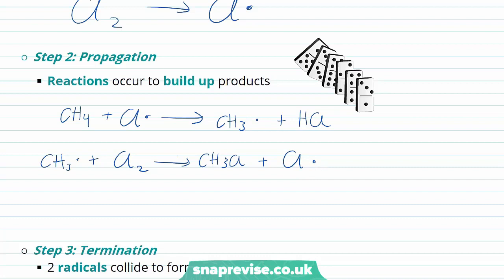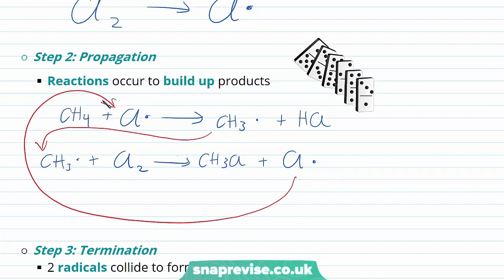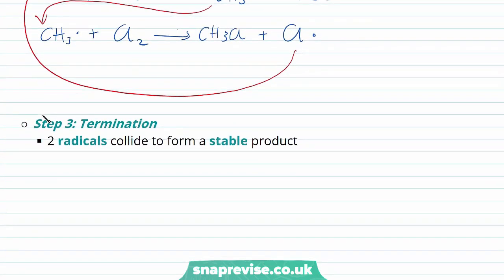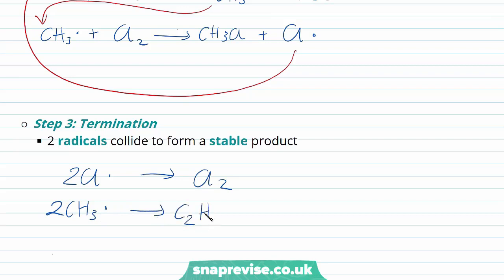This step is much like a domino reaction, because the methyl radical formed in the first propagation step can go on to take part in the second propagation reaction, which forms a chlorine free radical, which can go on to take part in the first propagation reaction — and we can see how these reactions could repropagate themselves. The third step is the termination step, where two radicals collide to form a stable product. Two chlorine free radicals can collide to form a molecule of chlorine; two methyl free radicals can react to form ethane (C2H6); or a methyl free radical can react with a chlorine free radical to form chloromethane.